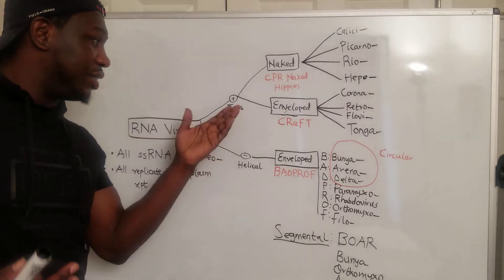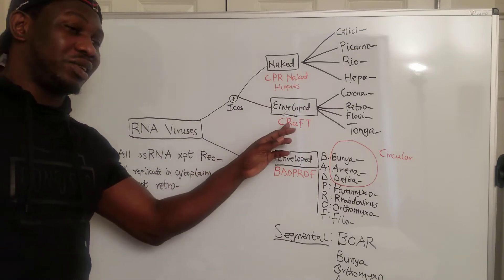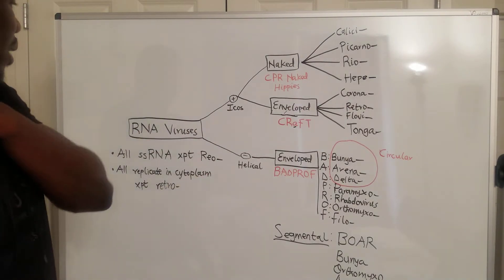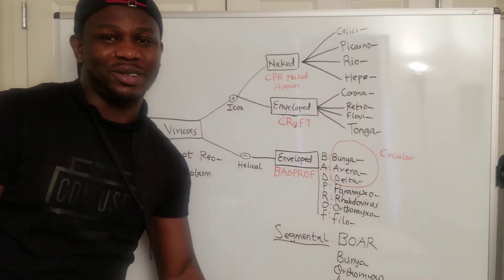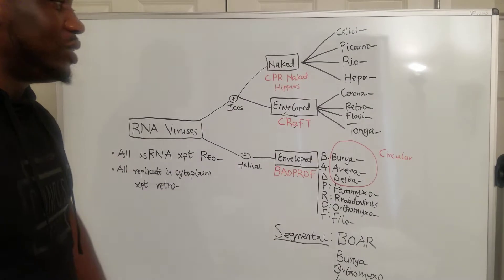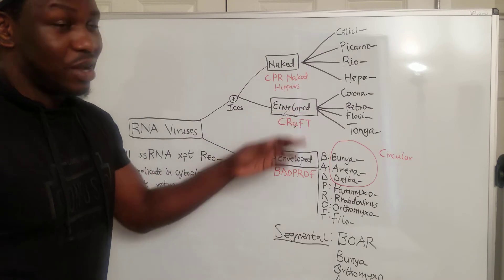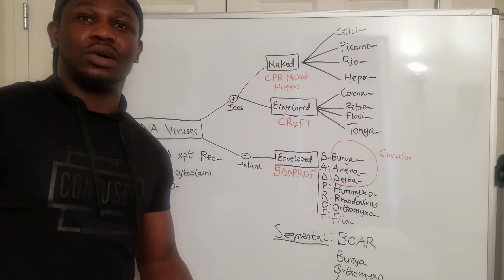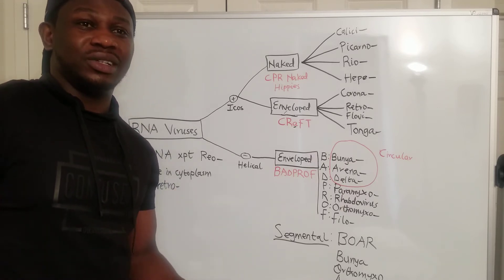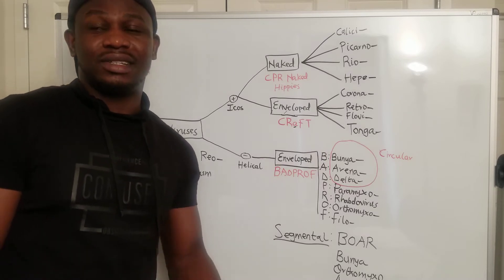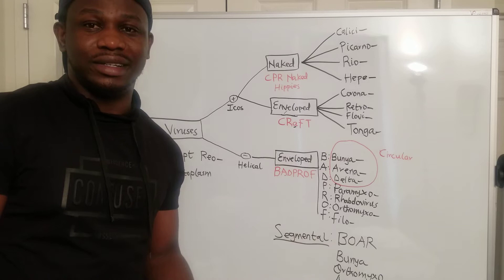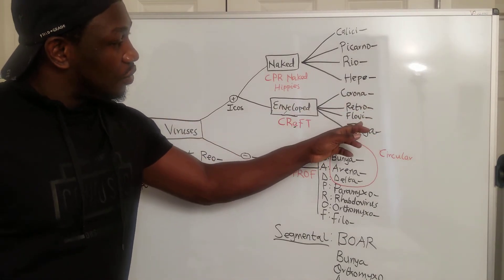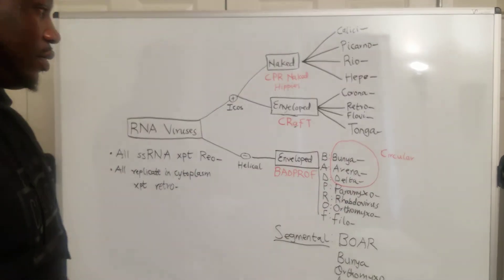For the enveloped positive RNA viruses, remember the mnemonic CRAFT — the A is silent, so we focus on C, R, F, and T. C is coronavirus — we all know we're going through the coronavirus pandemic. They are enveloped, which means they need moisture, so during summer coronavirus tends not to survive as long because the drier environment affects their envelope. R is retrovirus, F is flavivirus, and T is togavirus.